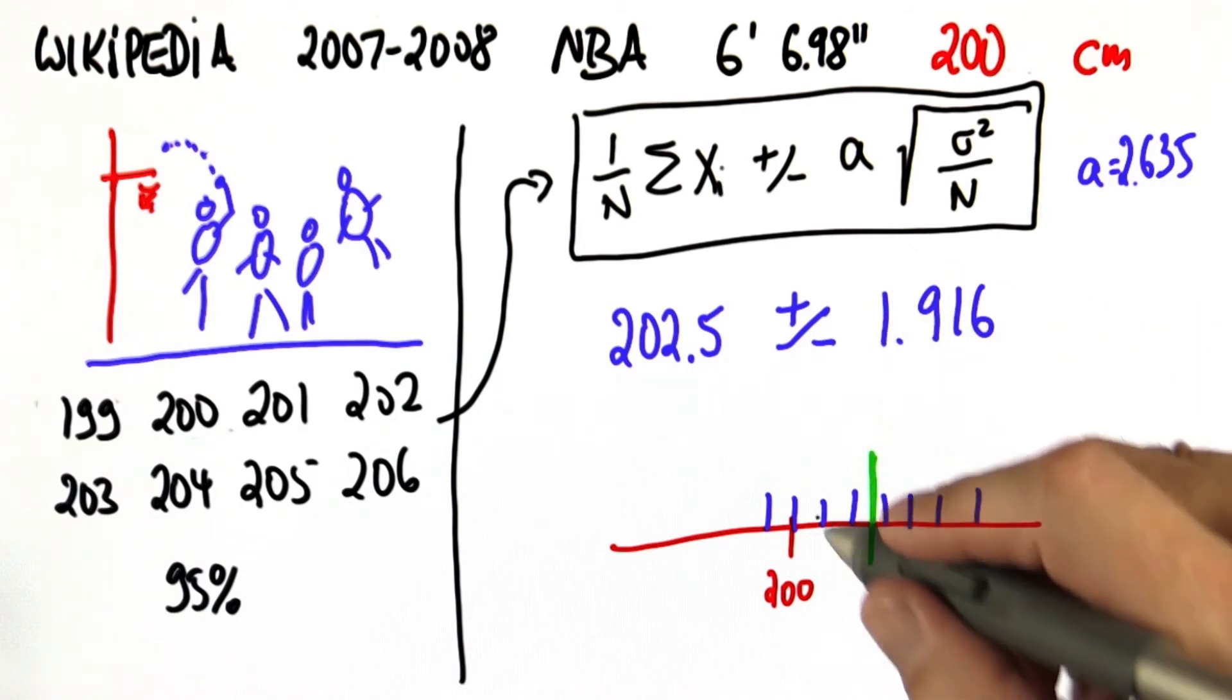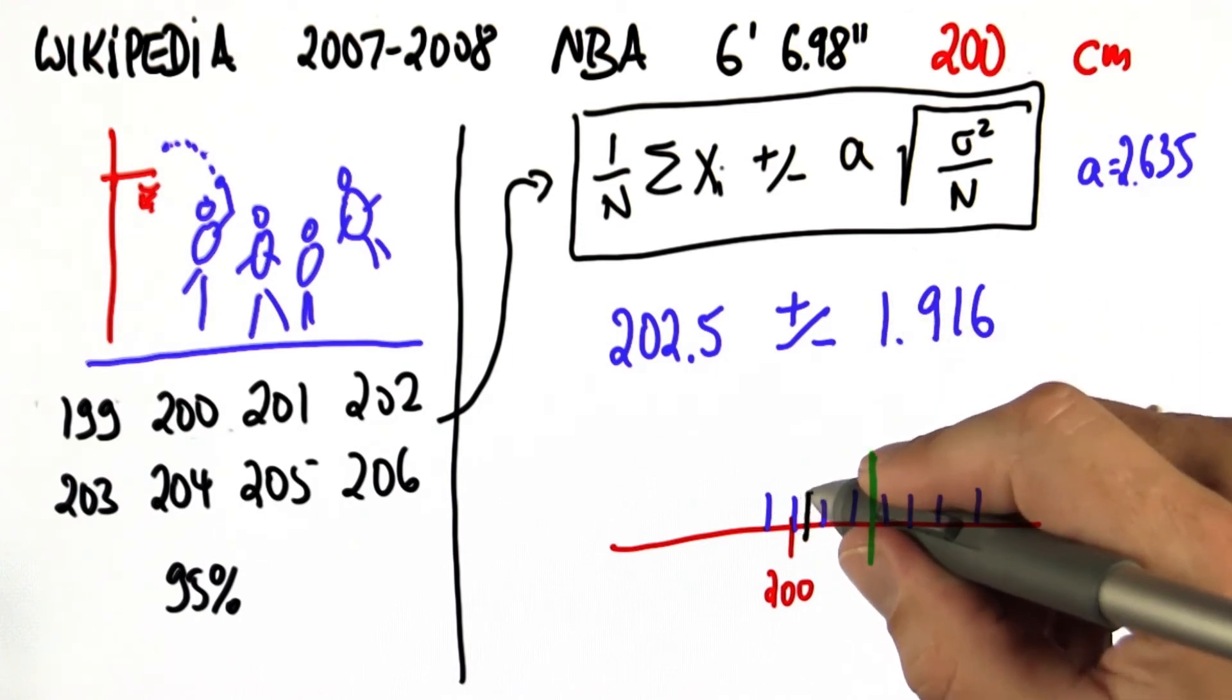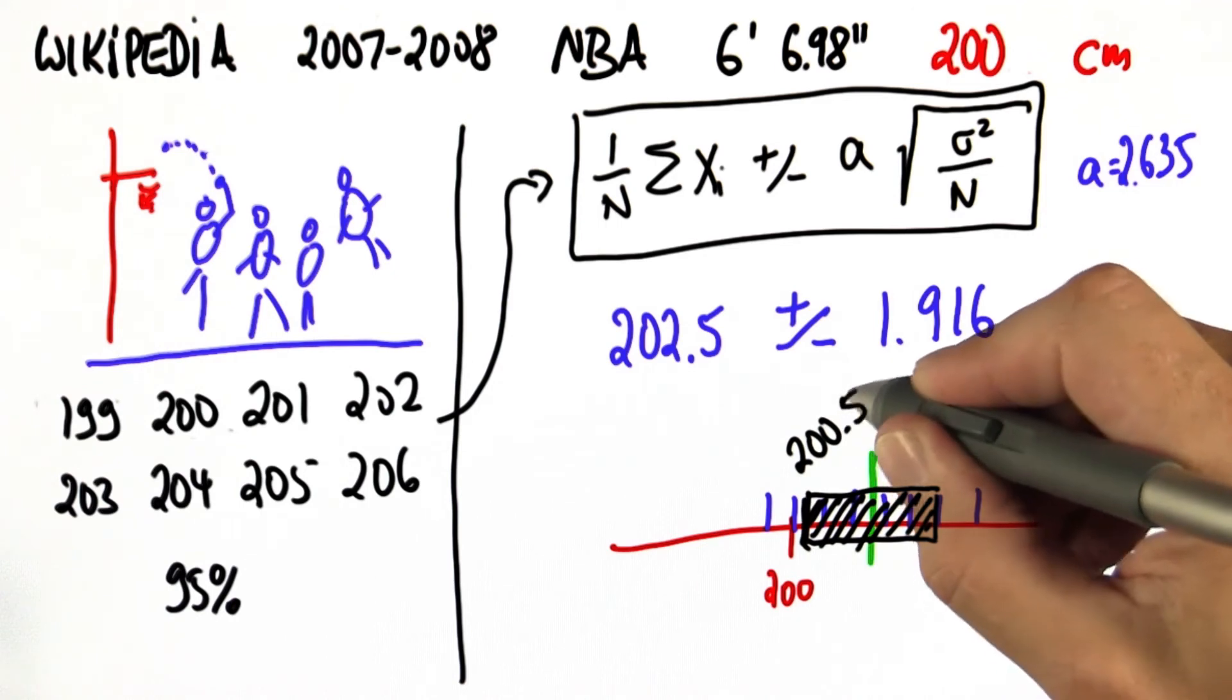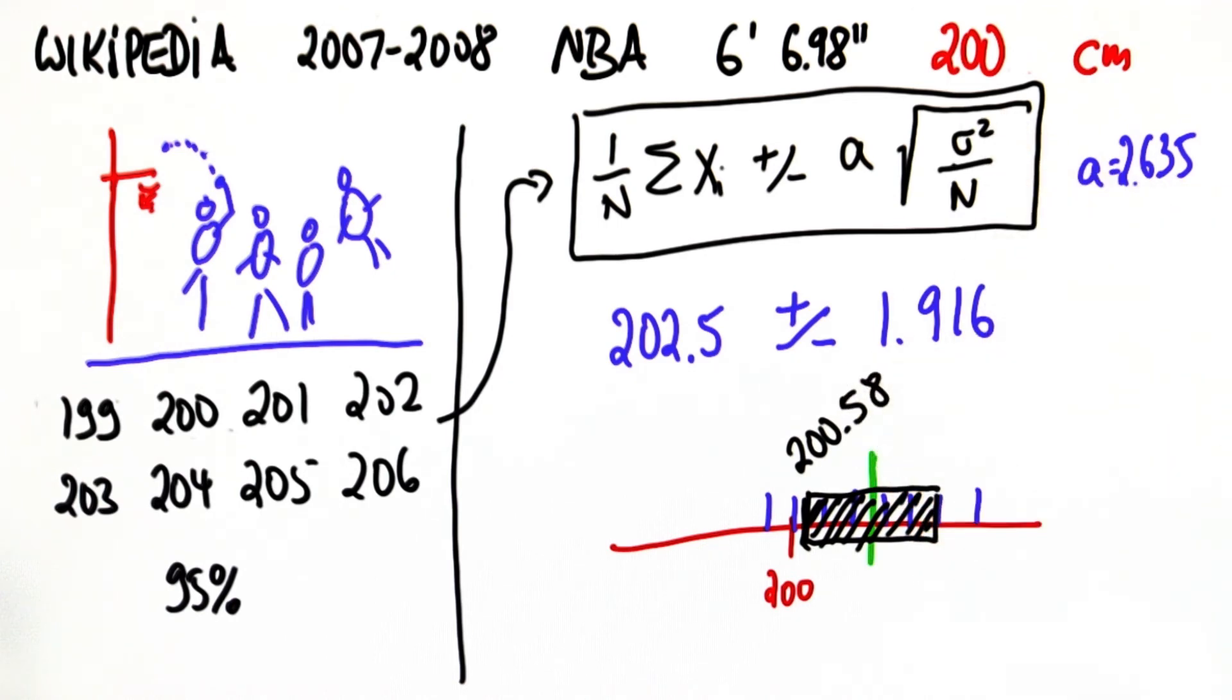And the 95% confidence interval stops at 200.58, just short of 200. And that means we reject the hypothesis of 200 centimeters based on our sample of eight people because the confidence interval doesn't quite make it there.